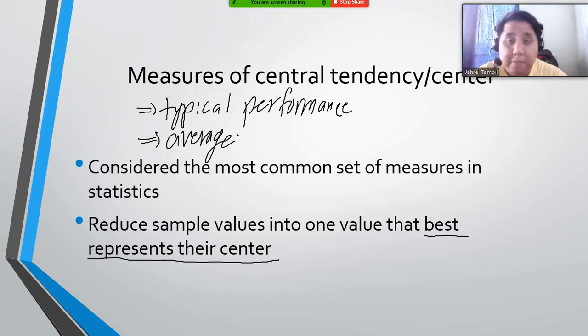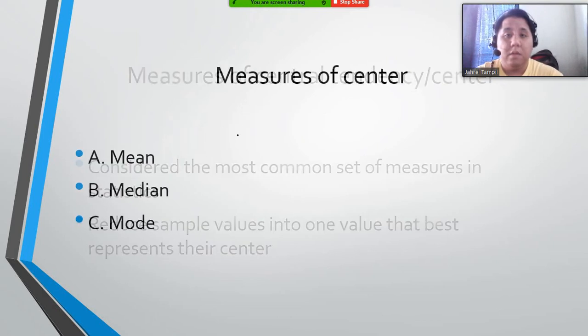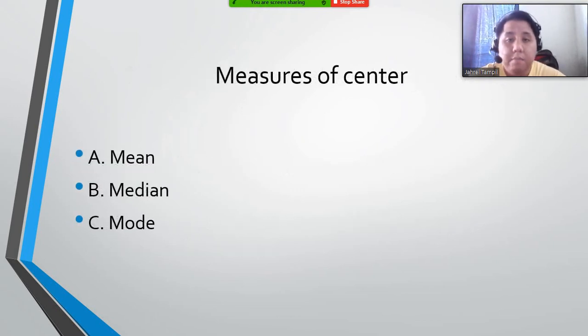Another word that is related to the measure of central tendency is the word average. Although it might be more related to one measure, usually the word average itself can also be related to all measures of central tendency. And we have three measures of central tendency: the mean, the median, and the mode.